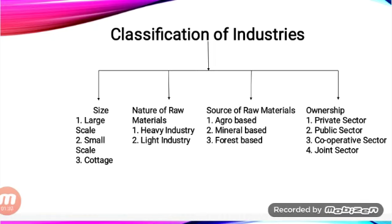The third basis is source of raw materials — that is, from where they get their raw materials. When raw materials come from agriculture it is agro-based industry. When minerals are used it is mineral-based, and when raw materials come from forests it is forest-based industry.